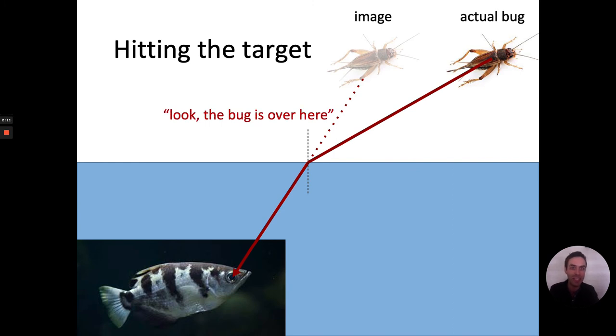So even though the fish sees the bug on the left, actually the bug is on the right. And in order to spit and hit the bug, the fish needs to aim at a different point than where the fish sees the bug to be. That's the archerfish's refraction physics problem.